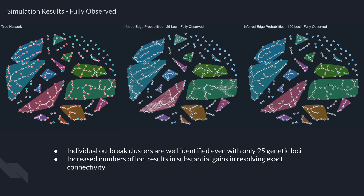Here we present the results of fitting our model. The true network is to the left with distinct outbreaks greater than two nodes highlighted and founder nodes colored blue. The middle panel shows a fit using 25 genetic loci with 10 distinct alleles each, while the right panel shows a fit using 100 genetic loci with 10 distinct alleles each. Nodes are colored by their probability of being a founder, with gray being 0 up to light blue being 1, and edge opacity reflects the probability of that edge. Even with only 25 genetic loci, individual outbreak clusters are well identified; however, increasing the number of loci results in substantial gains in resolving exact connectivity.